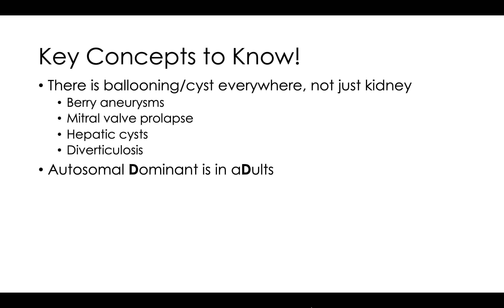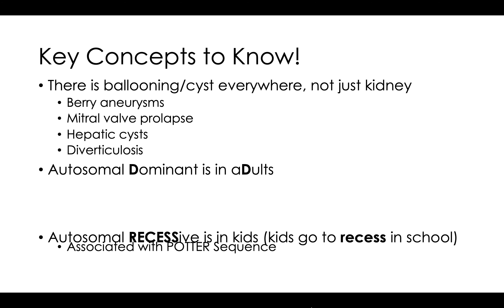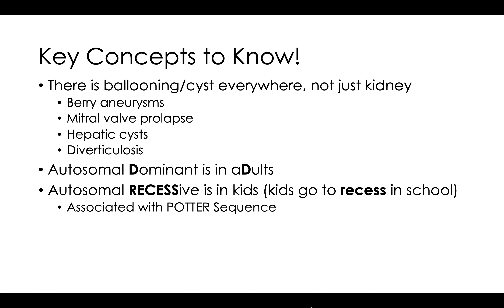The next super high yield concept is the difference between autosomal dominant and autosomal recessive polycystic kidney disease. First Aid goes really deep into this, but on the test the most important thing is: if the question stem describes cysts in the kidneys in a patient in their 40s, it's going to be autosomal dominant — dominant for adults. Versus autosomal recessive, which is going to be in a kid, because it's congenital. Autosomal recessive is in kids — and I think kids go to recess in school, so recessive equals kids.